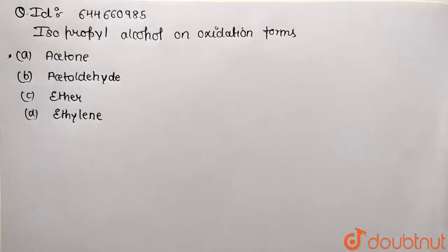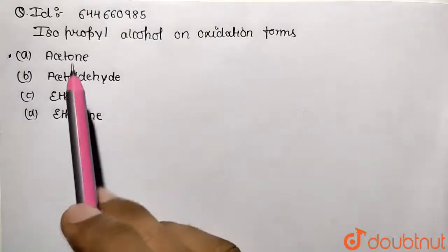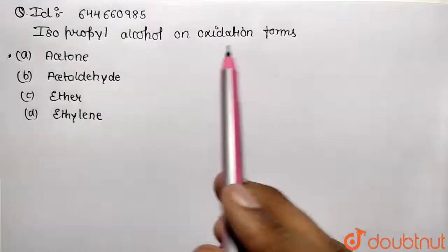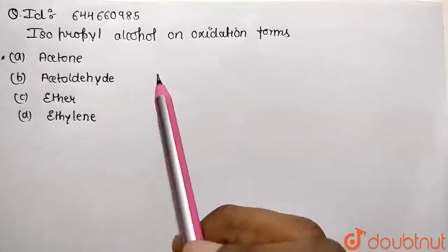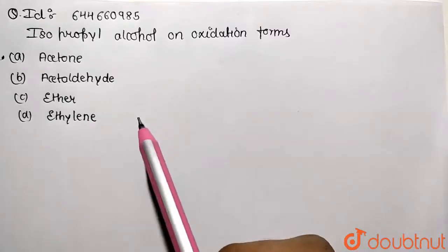Students, in this given question, let's understand how isopropyl alcohol on oxidation forms which of the following products. This was the given question: whether it is forming acetone, acetaldehyde, ether, or ethylene.